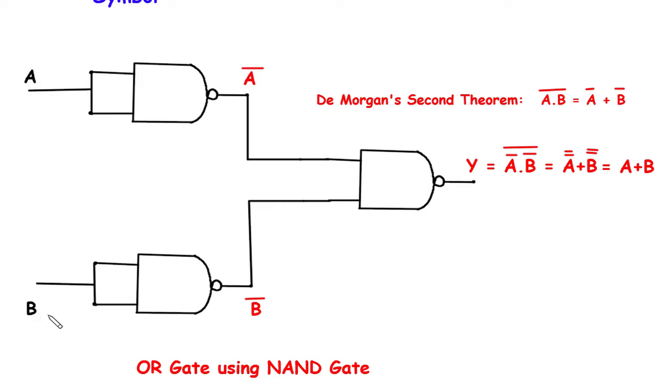Also for this, it will act as NOT gate. B is the input, so the output will be b bar.